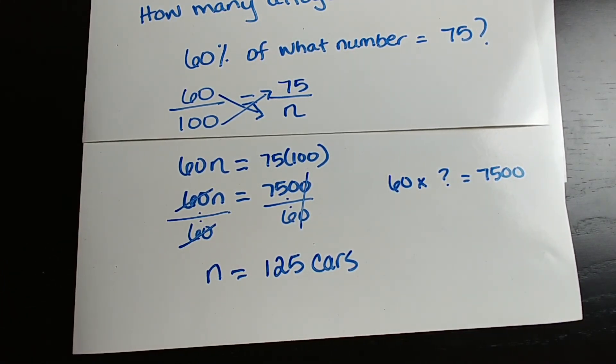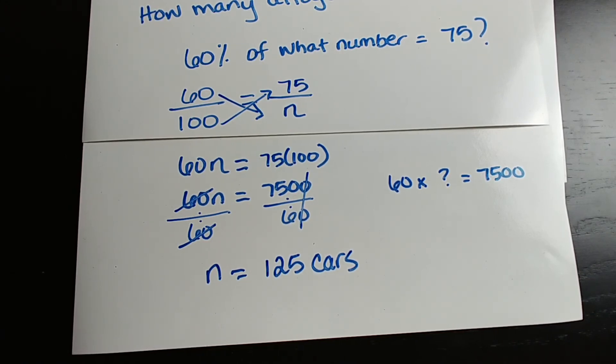This makes sense. We knew that 60 out of 100 would be four-door and we had 75, so we knew the total would be over 100. The number we got — 125 — is over 100.